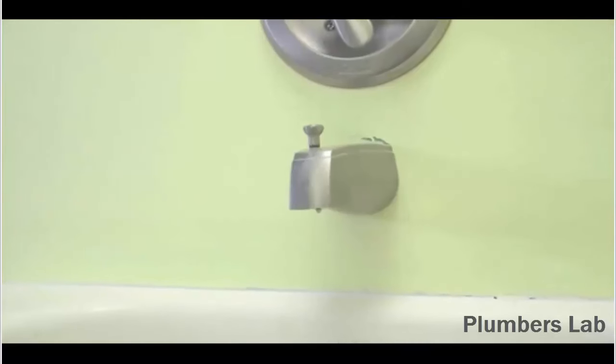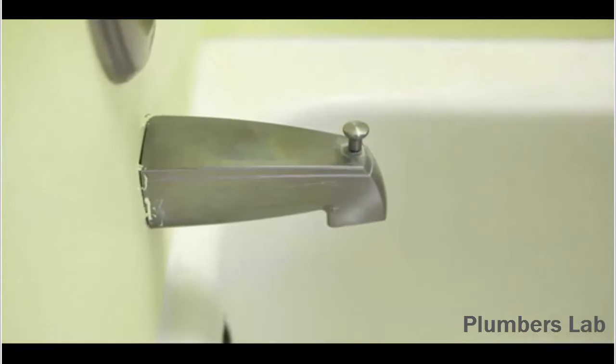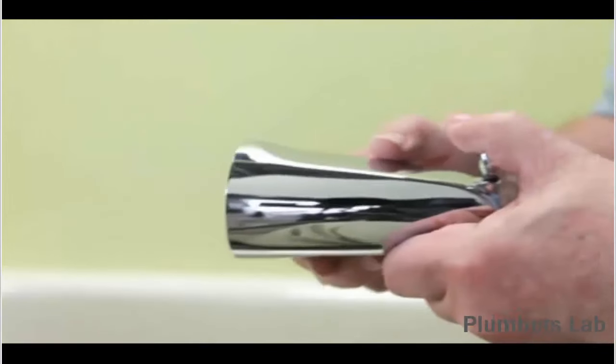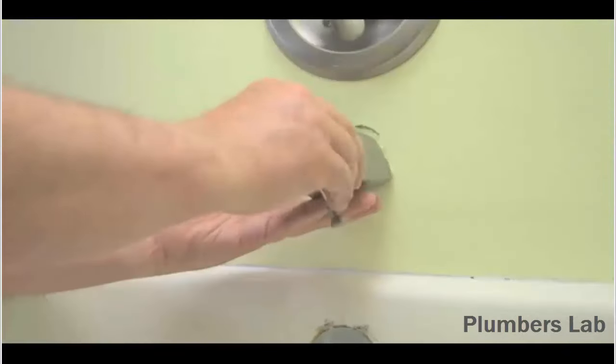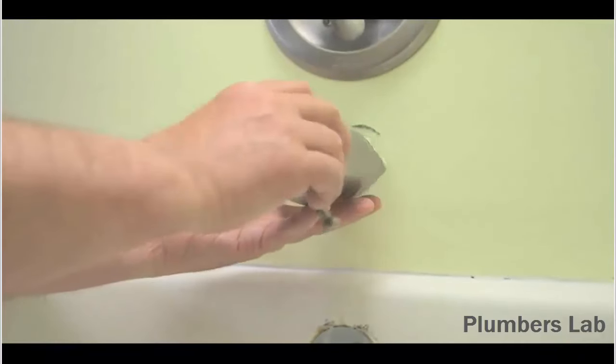It's also important to remove the tub spout since this will be on a portion of the wall you'll be cutting away. Some spouts have a set screw that holds them in place. If you don't find one, your spout should just twist off by turning it counter-clockwise.